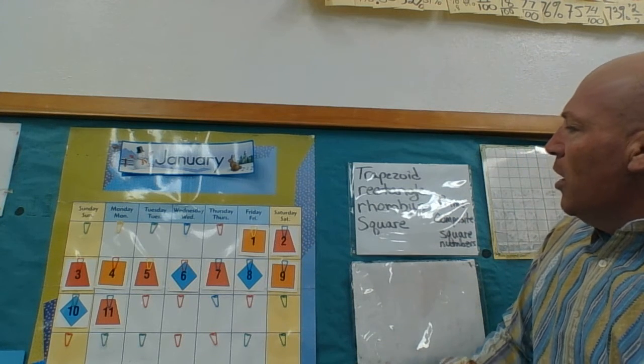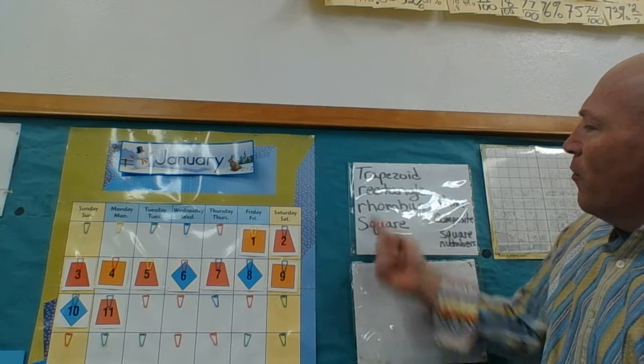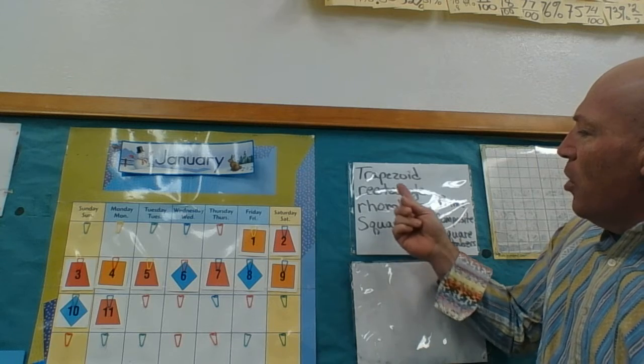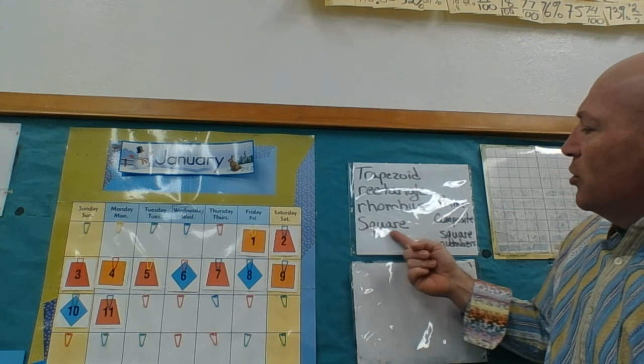And as we went over last class, our vocabulary words are trapezoid, rectangle, rhombus, and a square.